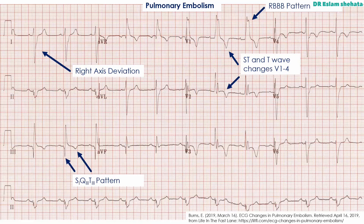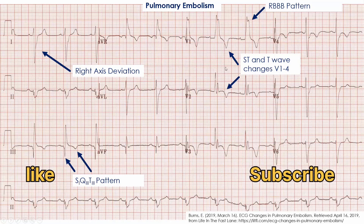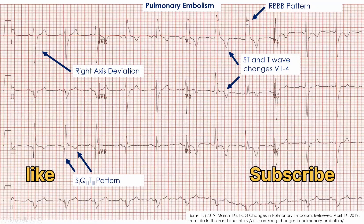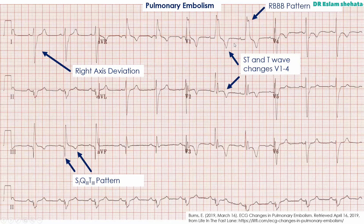This ECG demonstrates some of the changes that you might get with a pulmonary embolism. Things I want you to notice: we've got a right axis deviation, ST and T-wave changes — particularly T-wave inversion over in these right-sided leads — and we've got the right bundle branch block pattern with an RSR in V1. We've also got that S1, Q3, T3 pattern.